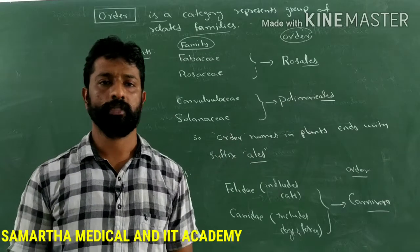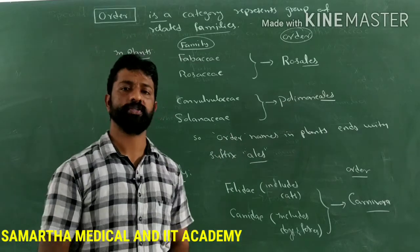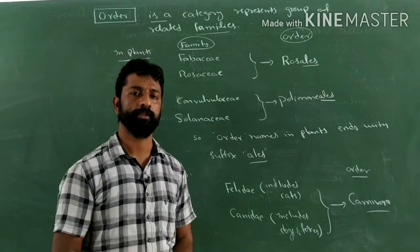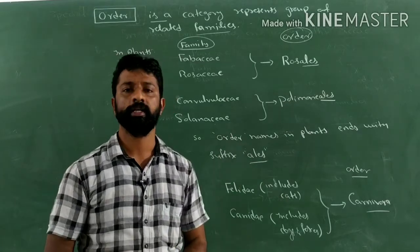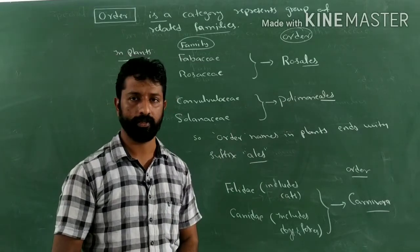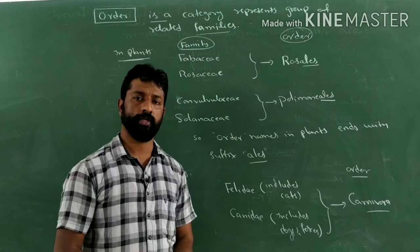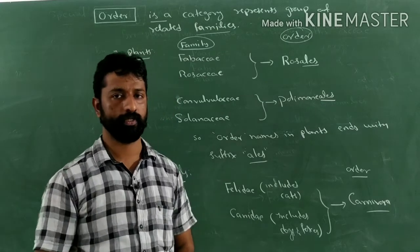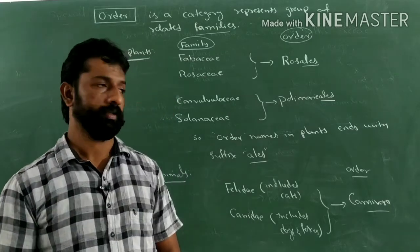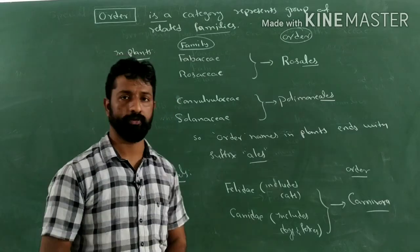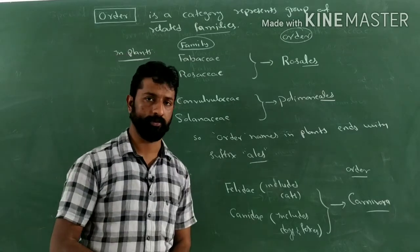These are the examples of orders in plants as well as animals. Make a note of these points. In the next class we are going to discuss the remaining taxonomic categories. Hope you have understood and enjoyed today's class. See you in the next class, thank you!